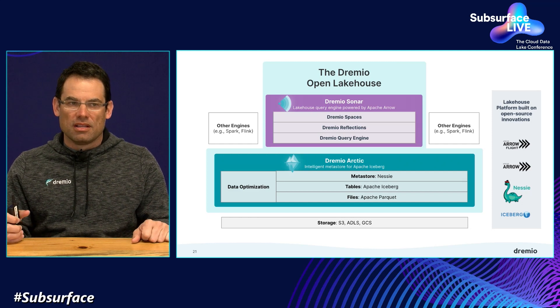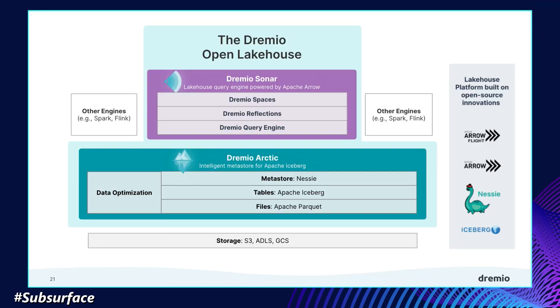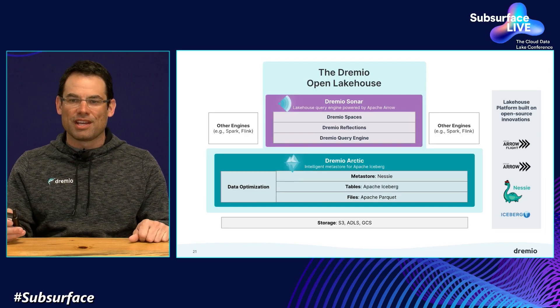Bringing this all together, Dremio Cloud now provides two different services: Dremio Sonar, a lake house query engine powered by Apache Arrow, and Dremio Arctic, an intelligent metastore for Apache Iceberg. Both services are available in Dremio Cloud and integrate with the rest of the ecosystem — Dremio Sonar can be used with a variety of metastores, and Dremio Arctic can be used with a variety of engines. To show you what this looks like, I want to invite Jason Hughes to the stage to demo Dremio Arctic and Dremio Sonar as well as other engines all working together.